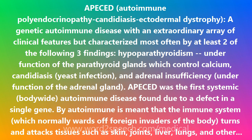Although APESD is generally rare, it is more frequent in three genetically isolated populations: the Finnish, Iranian Jews, and Sardinians. The child with APESD develops problems in numerous glands.